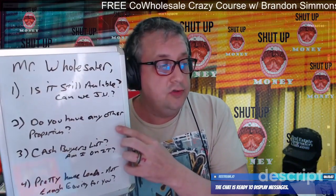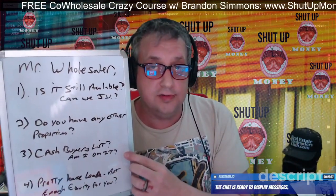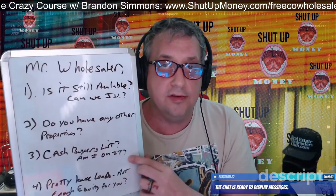Number two: ask them, 'Do you have any other properties?' They might have properties almost ready to go — maybe getting them under contract today with pictures by tomorrow. You want to know about it. Number three: find out if they have a cash buyers list and whether you're on it. You want to get on that cash buyers list.